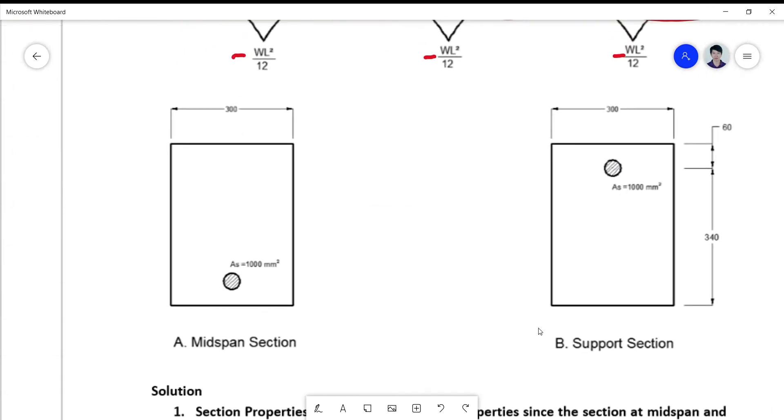The beam dimensions are just the same, but now we have two sectional dimensions: the midspan and the support. The midspan has a bottom reinforcement and the support has a top reinforcement, the area of which are just the same for simplicity of computation.